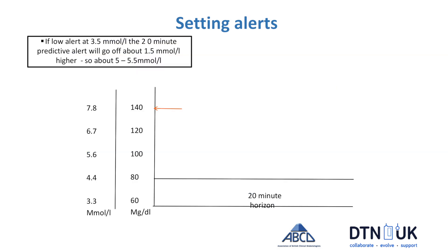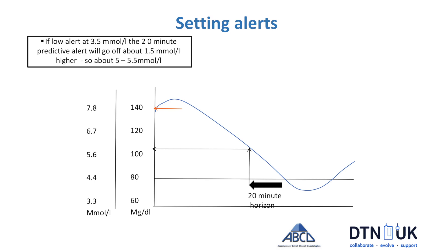Let's talk about how we use the alerts on continuous glucose monitoring. Most systems have a low alert which you can set at a certain level, and it will tell you when you reach that. But most systems also have a predictive alert, which tells you 20 or 30 minutes before you hit that number. If you set your low alert at 3.5 millimoles per litre — which is about the average people set it at — and you're dropping by one arrow, which means one millimole in 15 minutes, it's going to go off about one and a half or two millimoles higher than where you set it. So if you set it at 3.5, you're going to get an alert at about 5.5.